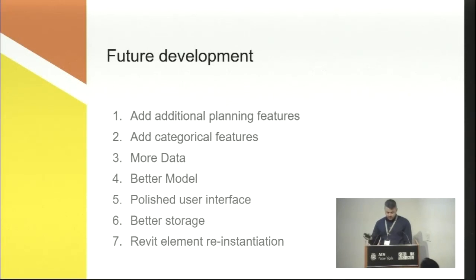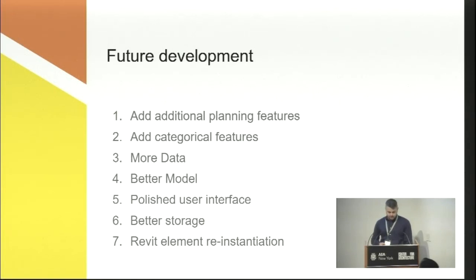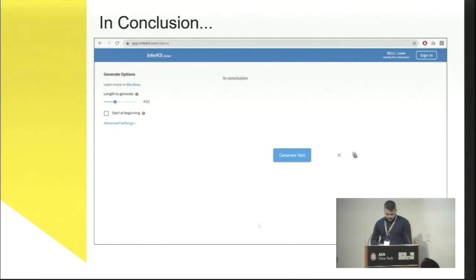Ideally, the export process would export not to static Rhino geometry but would also export the parametric information needed to recreate the unit as native Revit elements. Then we could move beyond underlays into actual one-click unit creation. The remainder of the future items are more typical improvements: continuing to build up the data set by integrating data export procedures into project decommissioning, experimenting with architectures and larger data sets, and polishing pieces of the workflow that are still pretty hacky.